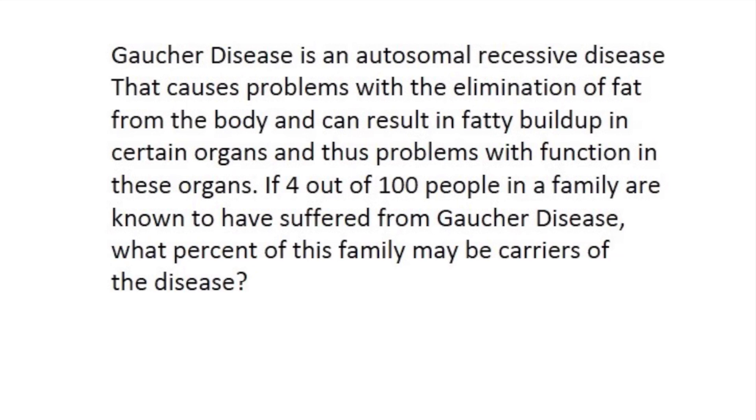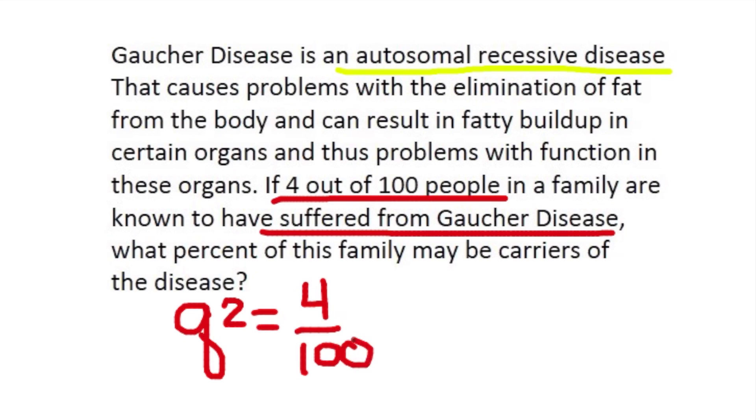So once again, we're going to start by outlining the important information, starting with knowing that it is an autosomal recessive disease. So now they tell us that 4 out of 100 people suffered from Gaucher disease, which is a homozygous recessive phenotype, which is represented by q². So q² = 4 out of 100, which is 0.04.